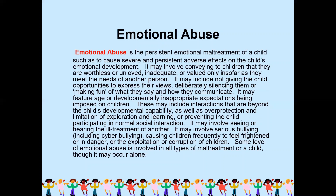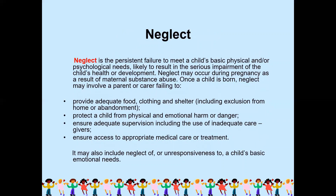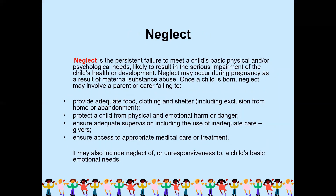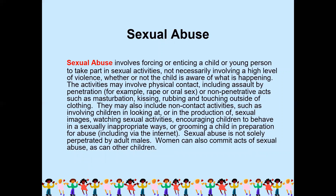Some level of emotional abuse is involved in all types of maltreatment of a child, though it may occur alone. Neglect is the persistent failure to meet a child's basic physical or psychological needs, likely to result in serious impairment of the child's health or development. Neglect may occur during pregnancy as a result of maternal substance abuse. Once a child is born, neglect may involve a parent or carer failing to provide adequate food, clothing and shelter; failing to protect a child from physical and emotional harm or danger; failing to ensure adequate supervision; or failing to ensure access to appropriate medical care or treatment.